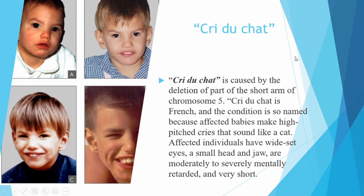Here are some examples of human mutation disorders. We have Cri du chat, which is caused by the deletion of part of the short arm of chromosome 5. Cri du chat is French, and the condition is so named because affected babies make high-pitched cries that sound like a cat. Affected individuals have wide-set eyes, a small head and jaw, are moderately to severely mentally retarded, and are very short.